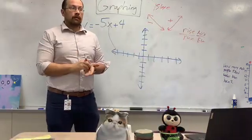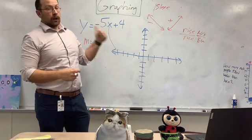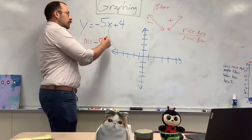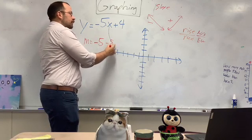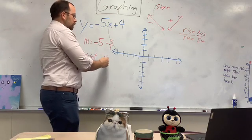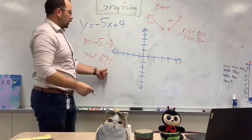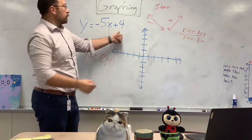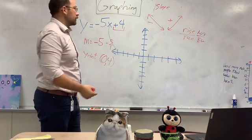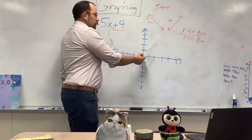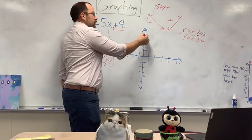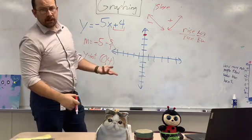To example number three, we're going to start getting into the negative slope. So my slope is negative five, or I can call it negative five over one for my rise over run. My y-intercept is zero, four. Again, all I'm doing is taking this number back here, the whole thing, and turning it into a point by putting zero on the x-spot. So that's where I start. One, two, three, and four. That is my y-intercept.